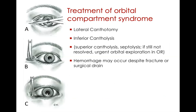The classic canthotomy and cantholysis: you take either a curved Westcott or iris scissors after anesthetizing the patient and ideally getting consent — but if it's an emergency and the patient can't provide consent, you still want to try to save the vision. It involves simply separating the lateral aspect where the upper and lower eyelid fuse. Cantholysis typically refers to inferior cantholysis, where you cut the inferior crus of the lateral canthal tendon. If necessary, you can also cut the superior crus, releasing the lower and upper eyelids so they swing open from the lateral aspect.